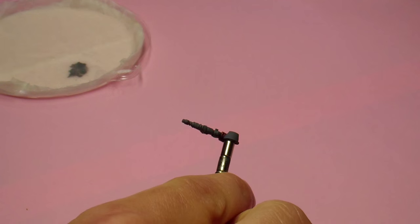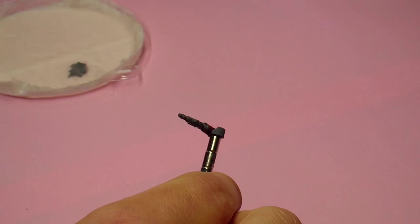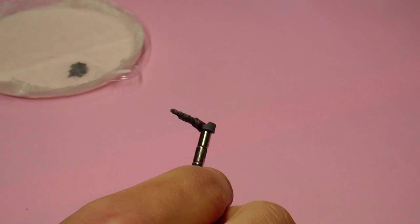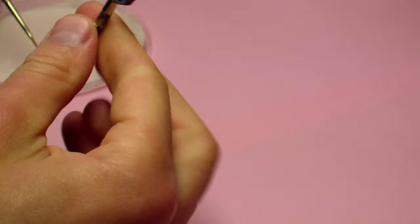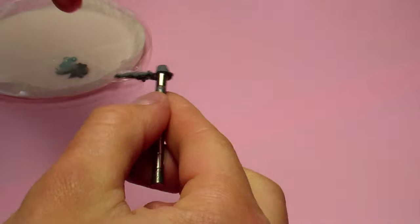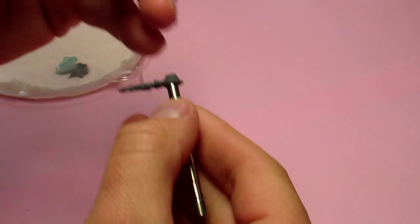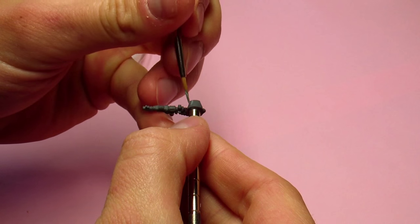And when our base color is ready, we are ready to use the first highlight. According to the instructions we have to mix it with a little bit of base color. So let's make this mix. Okay. Now I'm painting only the middle part of this shoulder pad.